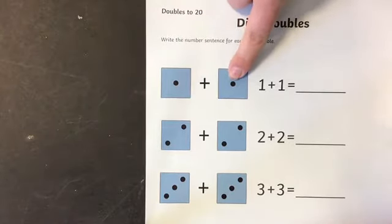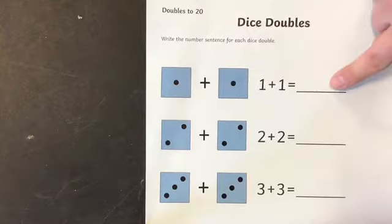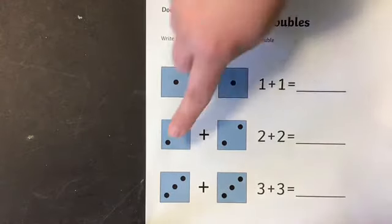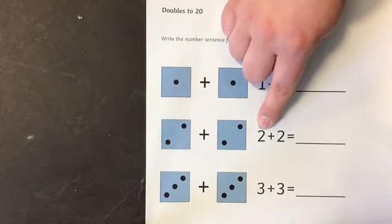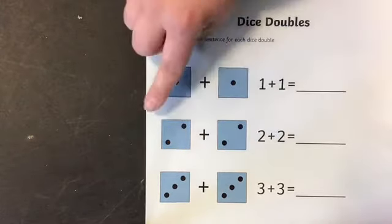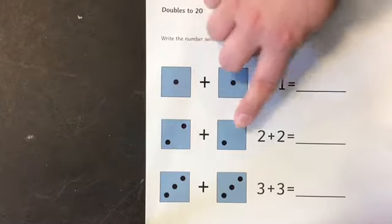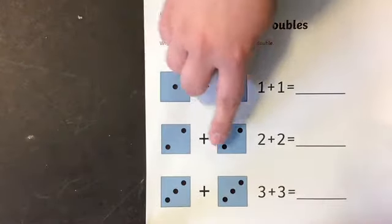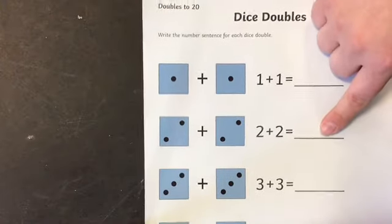One, one. One, two. So we would write our answer on the line. Then we've got two — if we're adding the same number, we've got two add two. I've got my two dice. So what does two add two make? One, two, three, four. That makes four.